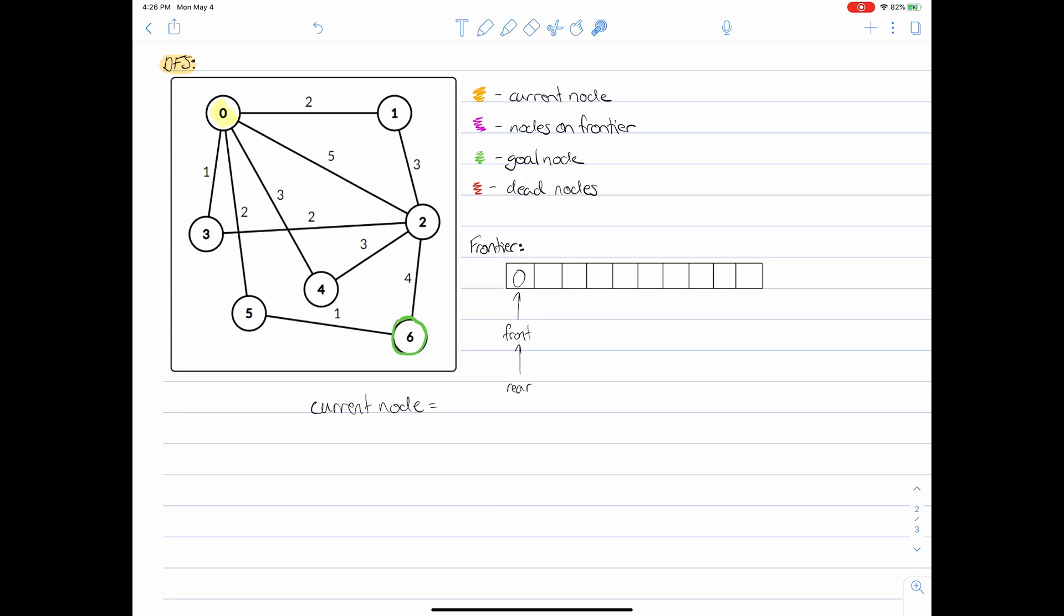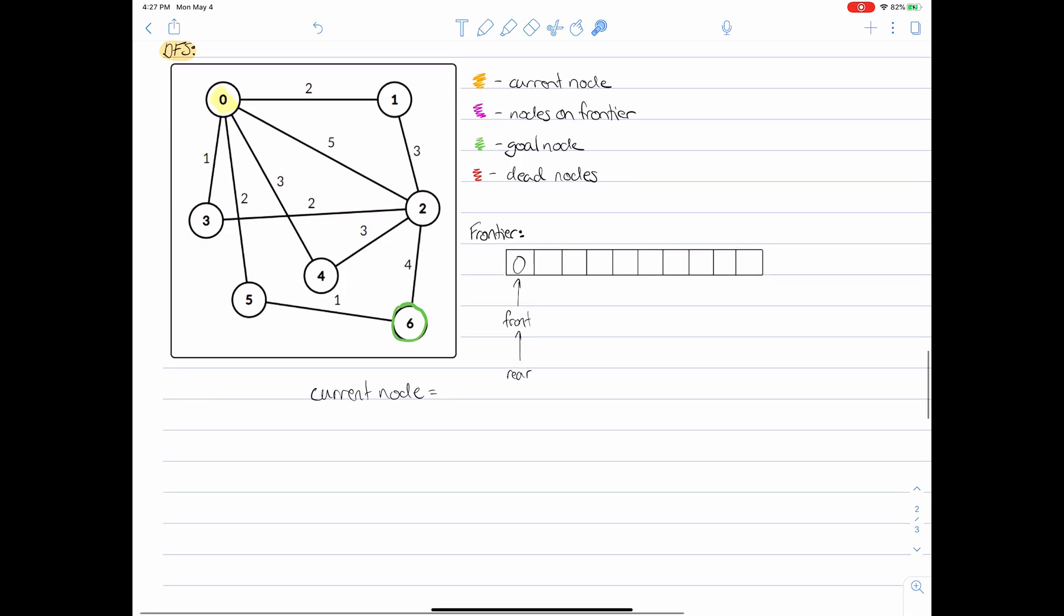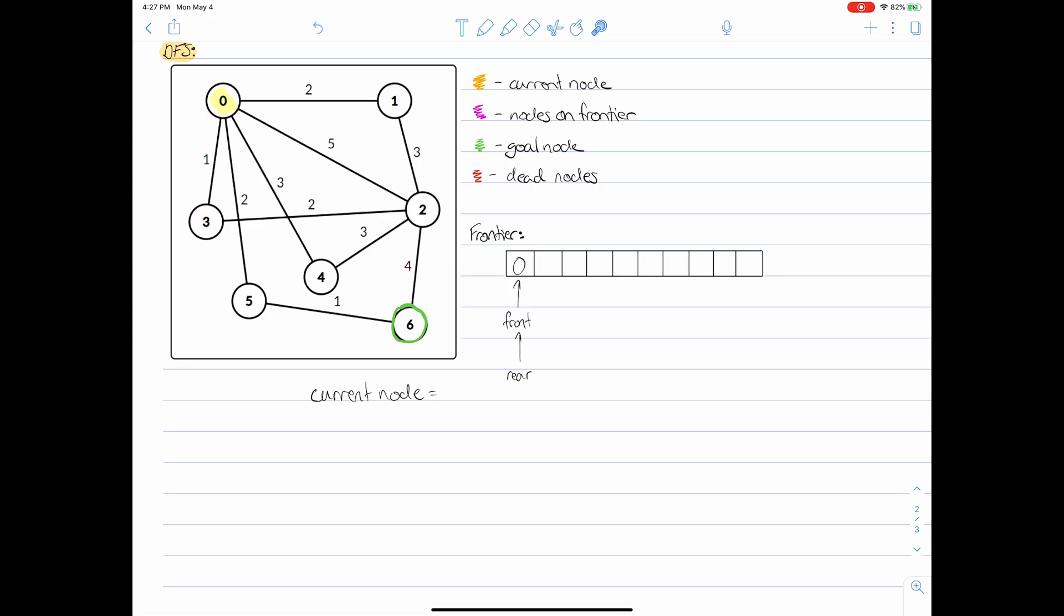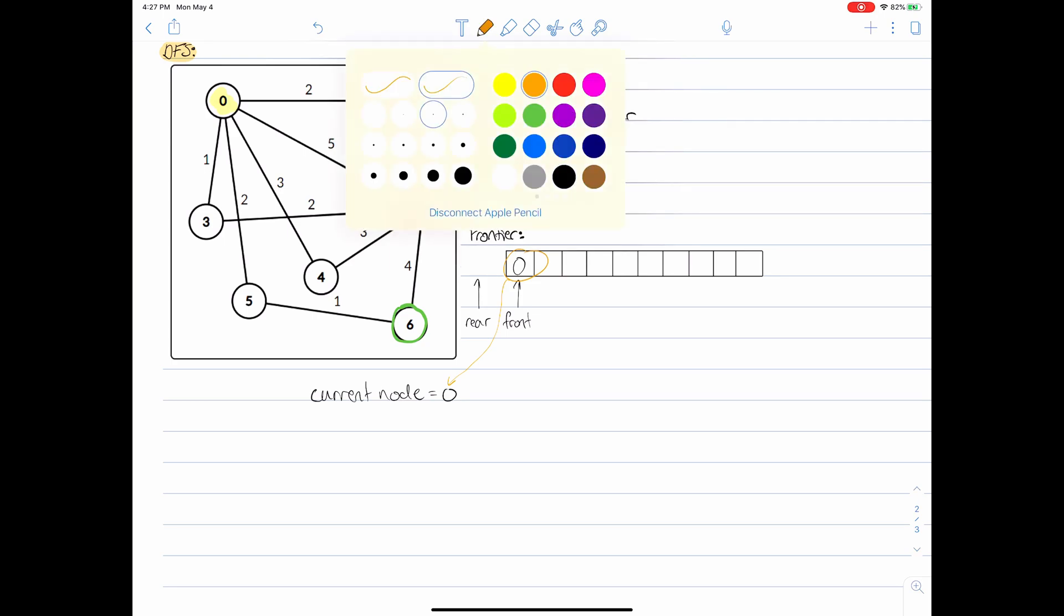Given that our frontier is no longer empty we need to dequeue our frontier. This is where the main difference between DFS and BFS comes in. When doing a BFS dequeue we simply take this front here and slide it forward. That's how we dequeue in BFS. In DFS however it's a little bit different. Instead of taking this front and moving it forward we actually take the rear and move it backwards. You'll see that this has a huge effect on the order in which we extract things from the frontier. We take this rear index, slide it backwards, take this value and assign it to our current node. So our current node is now zero and we're going to update our graph accordingly.